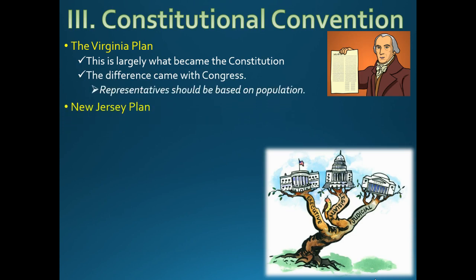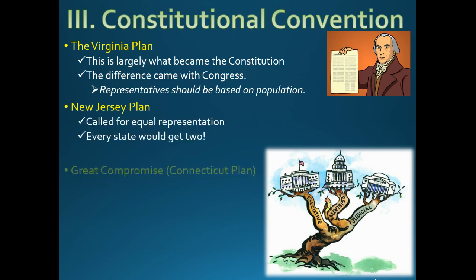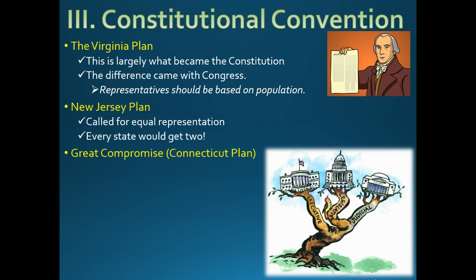Then the New Jersey Plan came along and said all states should be equal, which makes sense too. So the Great Compromise — the Connecticut Compromise — said this: